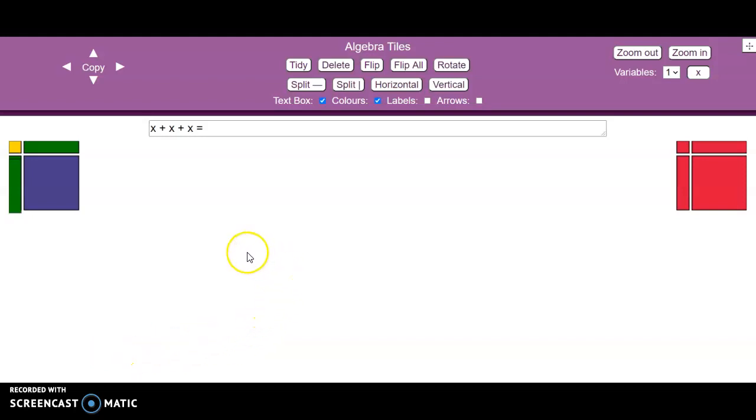Okay, so first we are going to use the algebra tiles to simplify this expression here, x plus x plus x. So I'm going to take three of my x tiles, because we have got three of them added together, and you can see that we have got three, so we can write that as 3x.